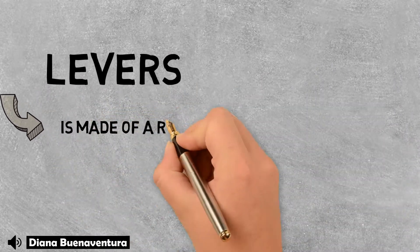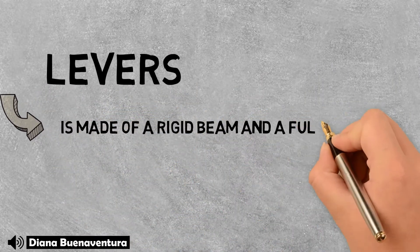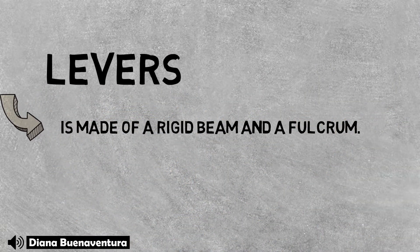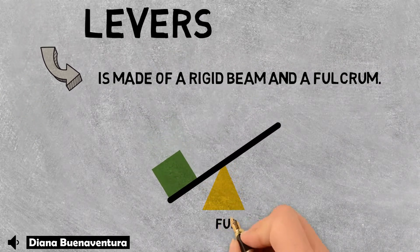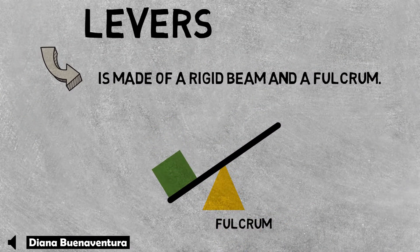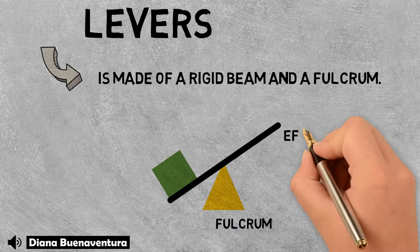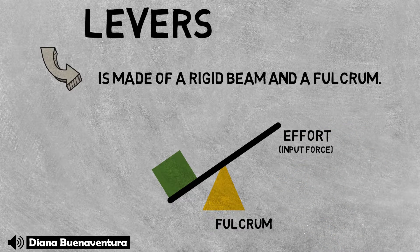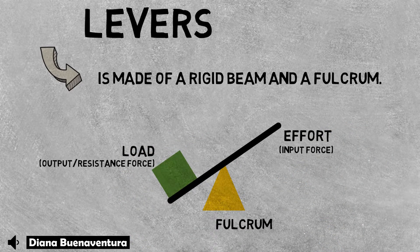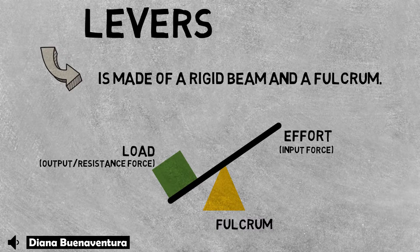A lever is made out of a beam, a fulcrum, and on top of the fulcrum is the pivot point or torque. All simple machines have two sides: an input side where we put in force, and an output side where the force comes out of the machine, or the location of the load, also called the force resistance.